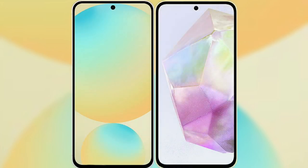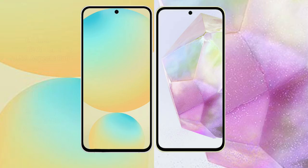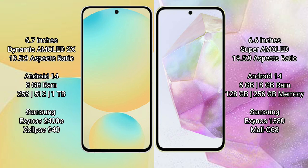I will compare the new Samsung Galaxy S24 FE with the Samsung Galaxy A35. The Samsung Galaxy S24 FE features a 6.7-inch Dynamic AMOLED display with a 19.5:9 aspect ratio. The Samsung Galaxy A35 features a 6.6-inch Super AMOLED display with a 19.5:9 aspect ratio.